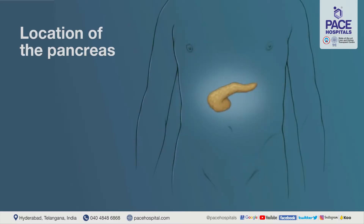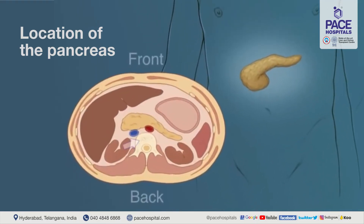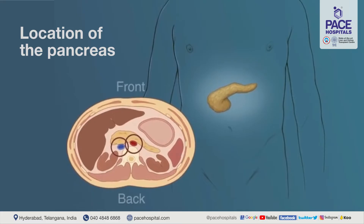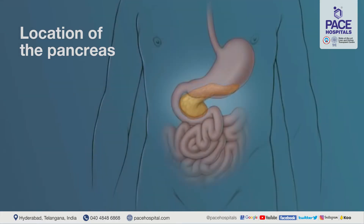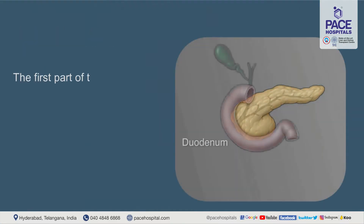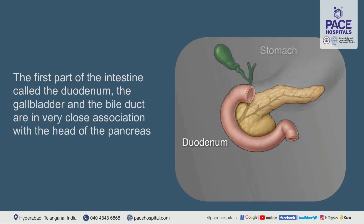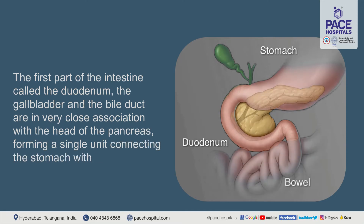The pancreas is a very important structure located posteriorly at the back of the body, just in front of the vertebral column. It is closely associated with the two great vessels of the body — the aorta and the inferior vena cava — which makes surgeries of the pancreas a bit challenging. The pancreas is very closely related to the liver and the gallbladder. Likewise, the duodenum, the gallbladder, and the bile duct are in very close association with the head of the pancreas, forming a single unit connecting the stomach with the intestine.